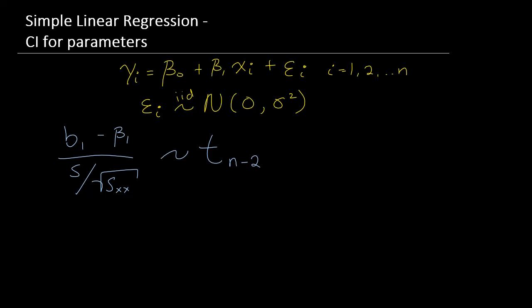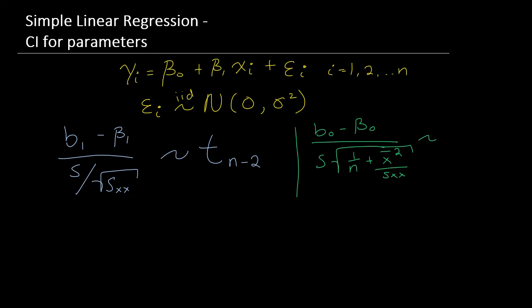Similarly, in the previous video, we discussed that b0 minus beta-0, divided by s times the square root of 1 over n plus x-bar squared divided by S_xx, is also a t-distribution with degrees of freedom n minus 2. So let's talk about how to use this knowledge to construct a confidence interval for the model parameters beta-1 and beta-naught.